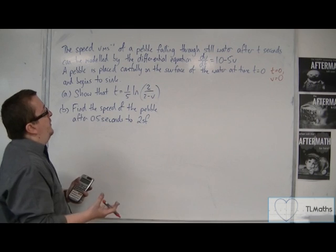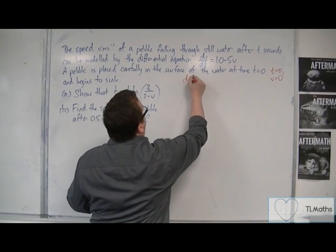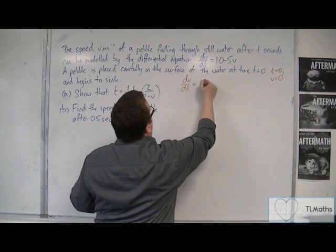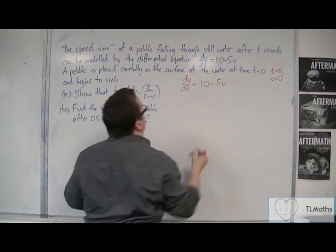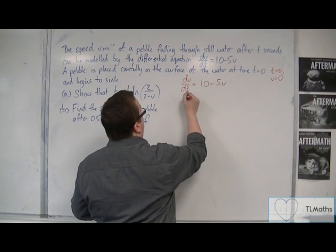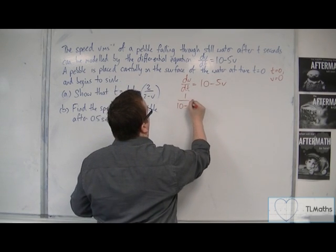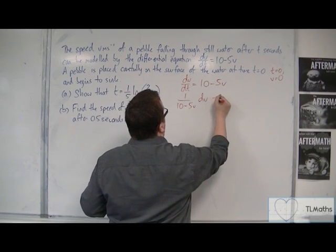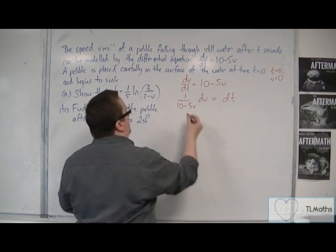So in solving dv by dt equals 10 minus 5v, I'm going to use separation of variables. I need to divide both sides by 10 minus 5v, then multiply both sides by dt, and then integrate.